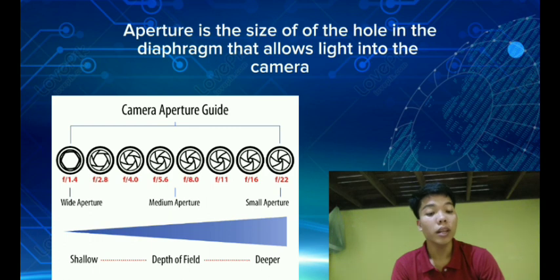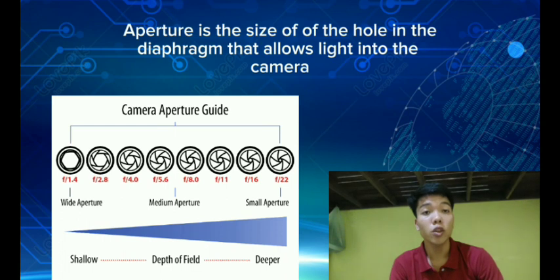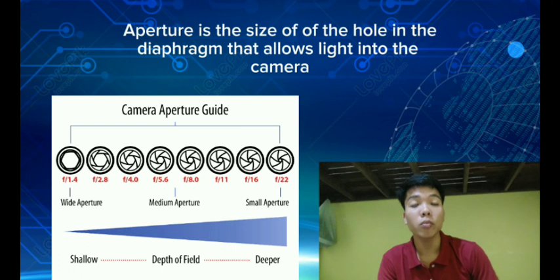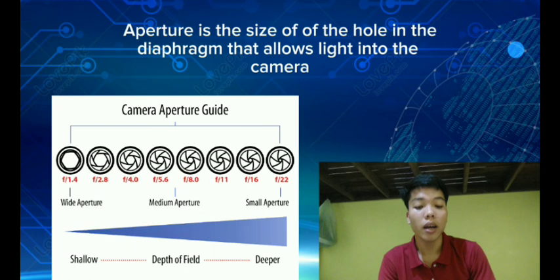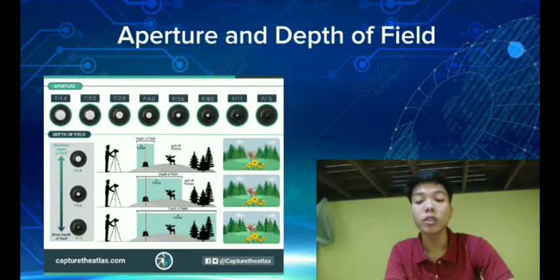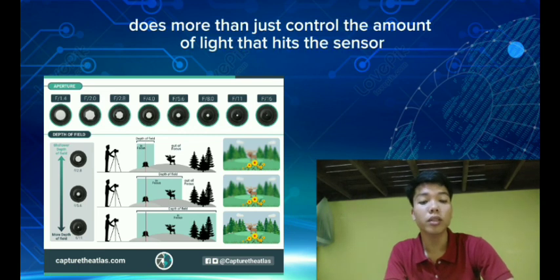The larger the aperture hole, the more light that enters the camera in a given time. The aperture also affects depth of field — it does more than just control the amount of light that hits the sensor. The size of the aperture affects the way an image looks. A larger hole lets in more light and produces a brighter image, while a smaller hole lets in less light.